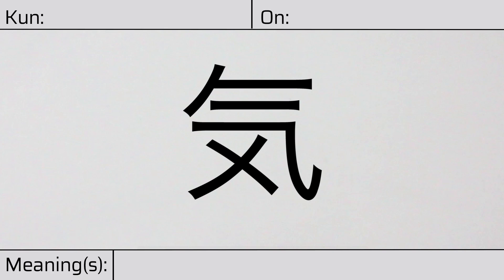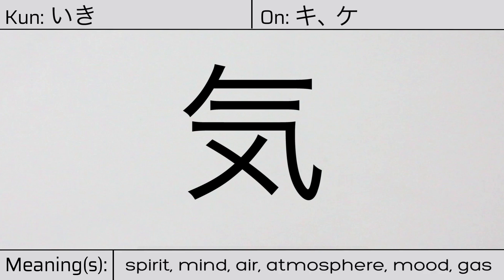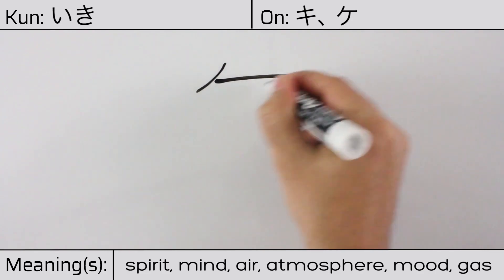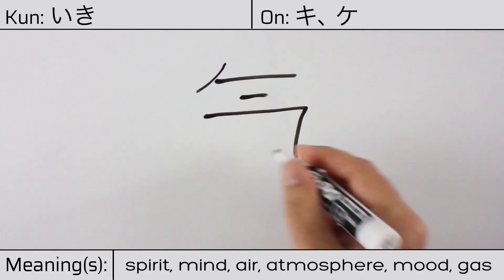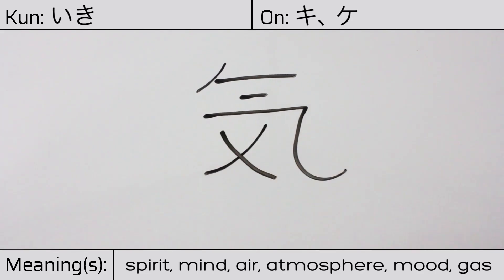Welcome to this lesson on Japanese kanji. Today, we'll be discussing this character. This kanji has a kunyomi or Japanese reading of iki, and it has onyomi or Chinese readings of ki or ke. This character has the meanings spirit, mind, air, atmosphere, mood, or gas. Here is the stroke order.